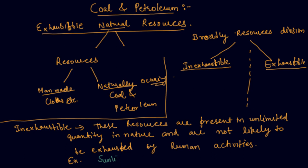So what are the examples of inexhaustible resources? Inexhaustible resources are sunlight — occurring naturally — or you can say air. You can pollute the air but you cannot exhaust the air. So these are the two examples of inexhaustible resources.